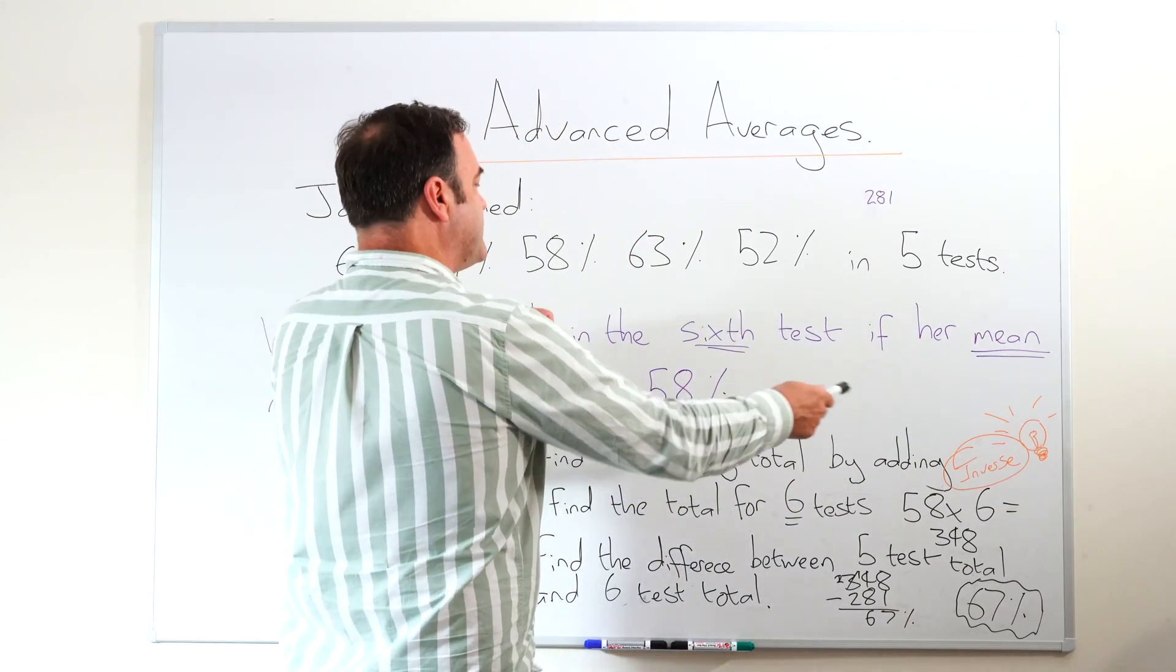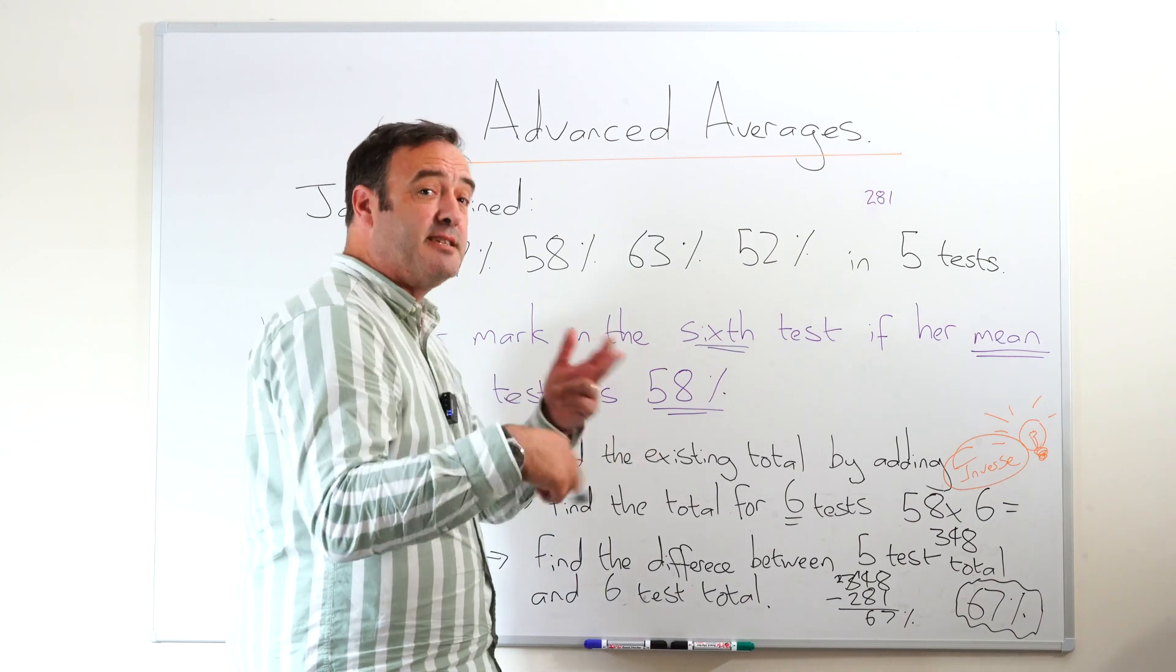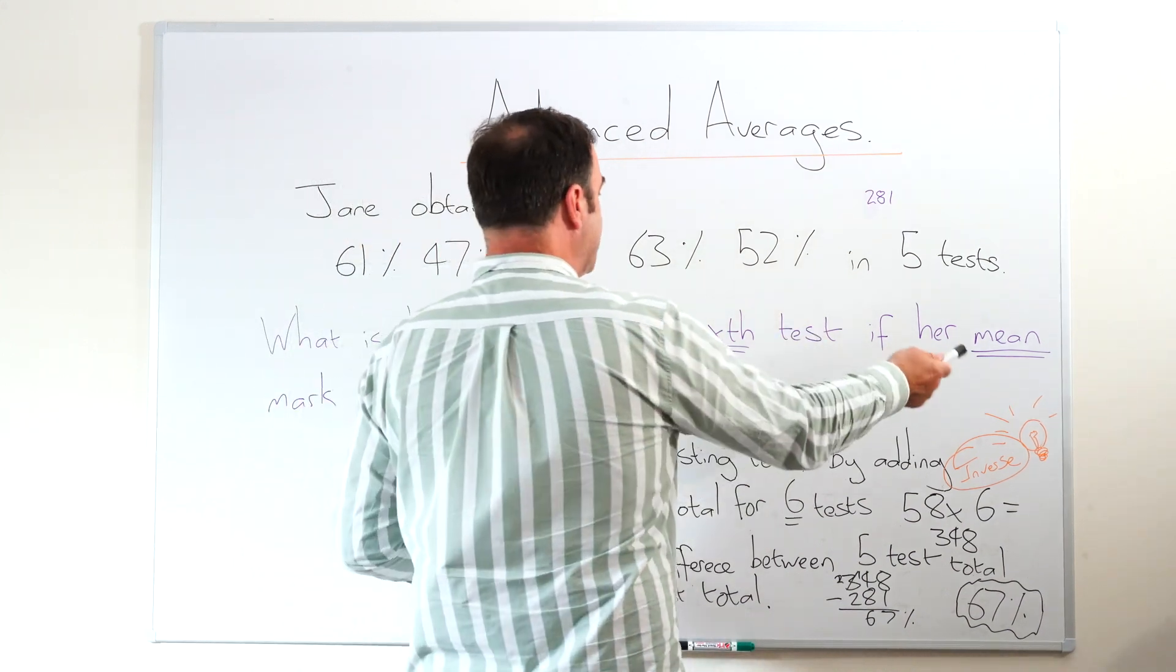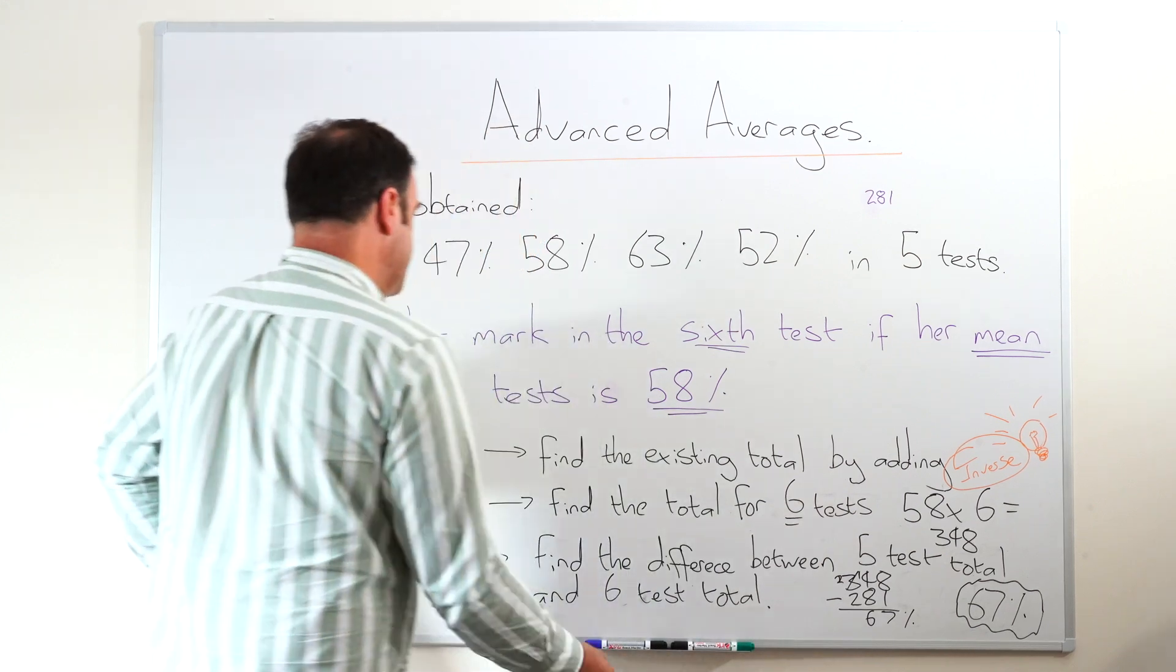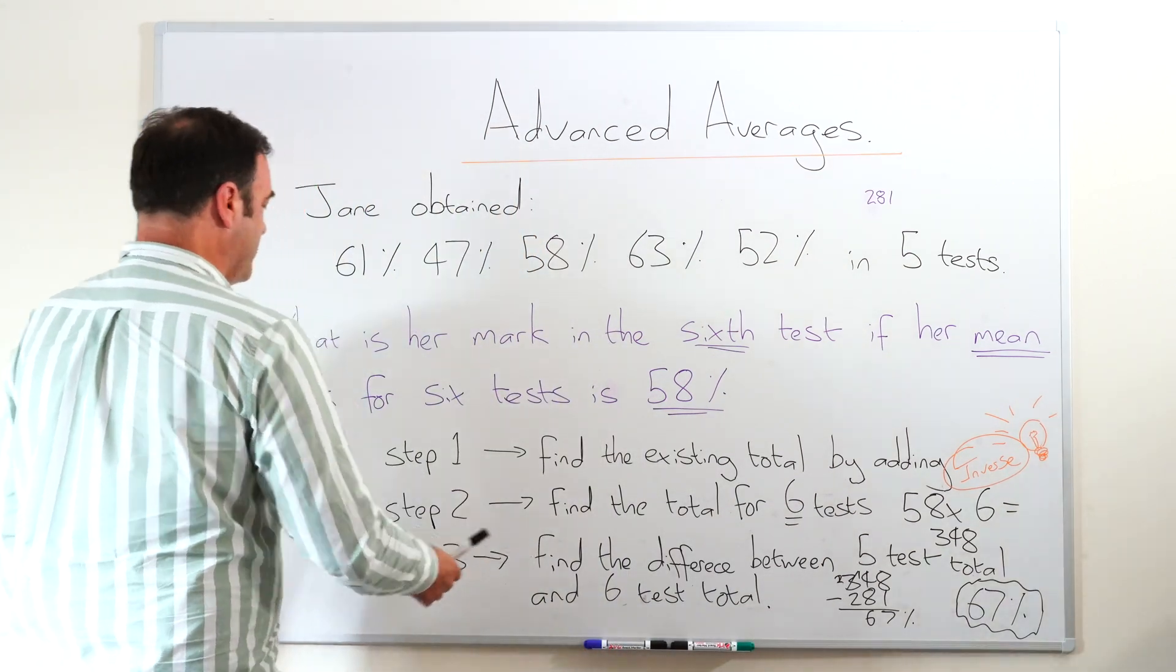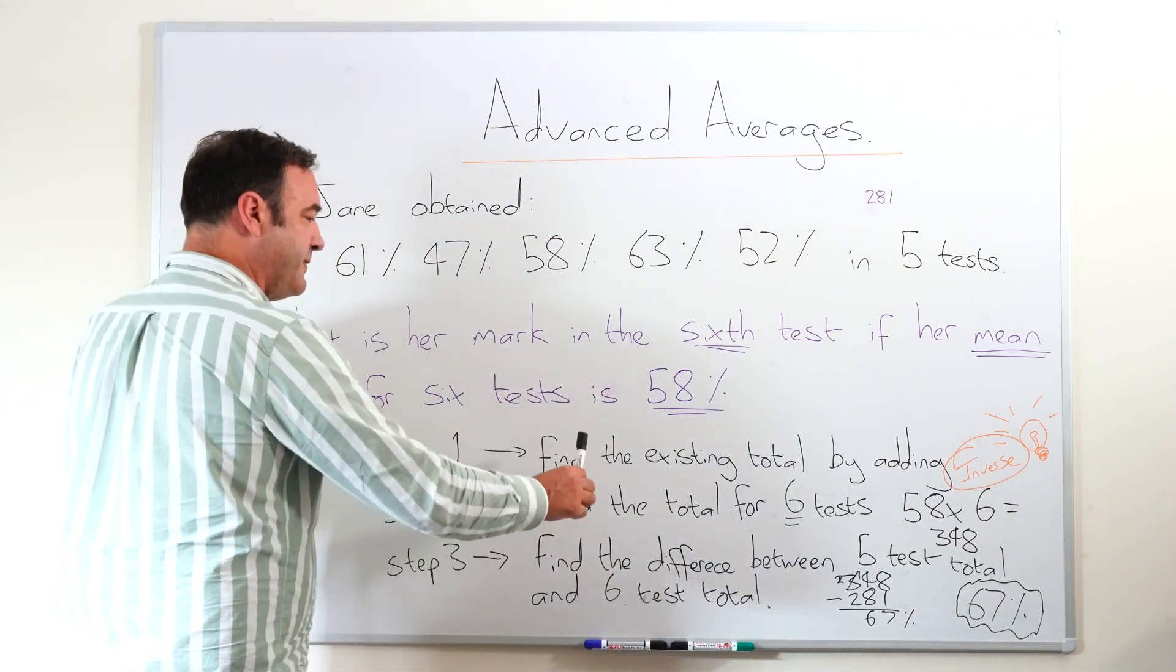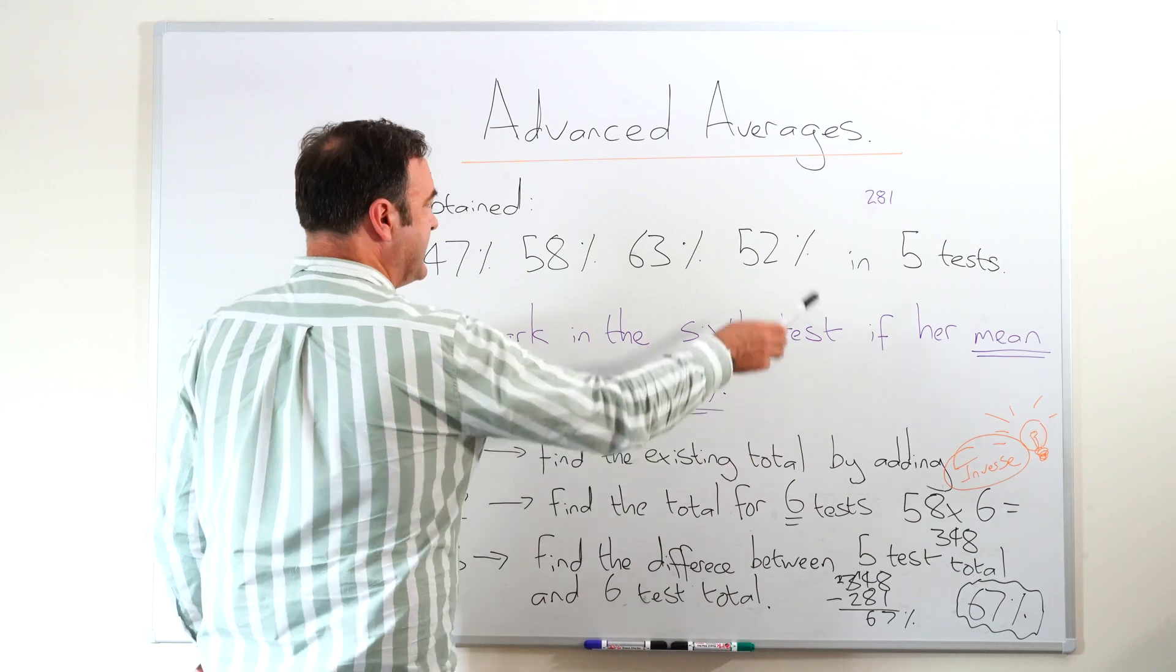So we could find the total by inverting this, doing the inverse, the opposite. Instead of divide to find the average, we multiply. So the steps are first of all, step one, find the existing total by adding 281.